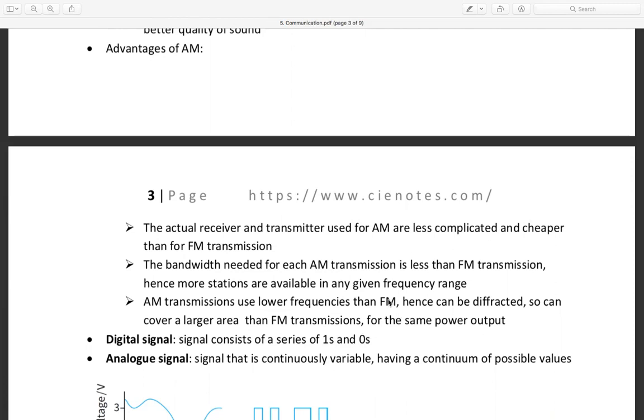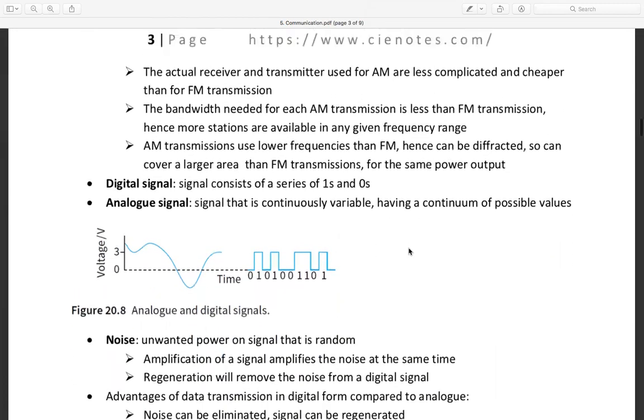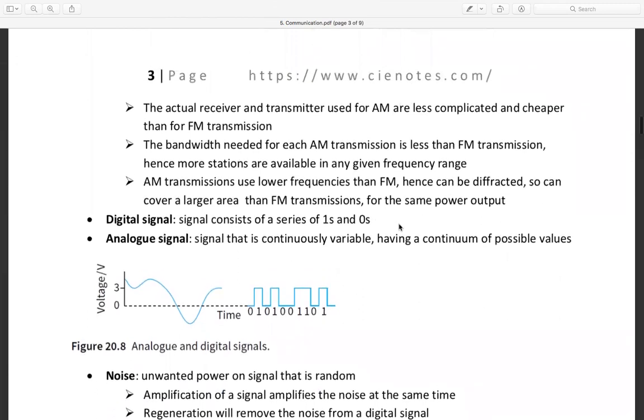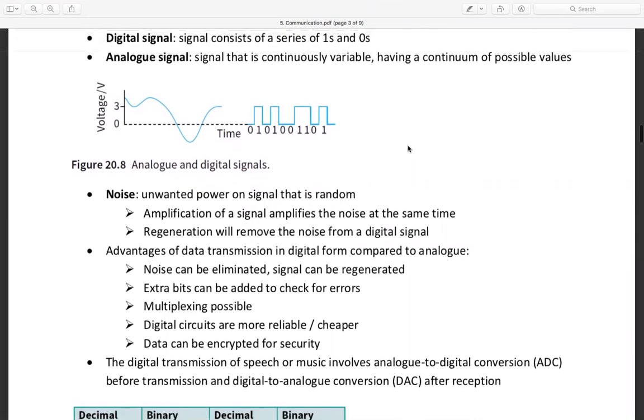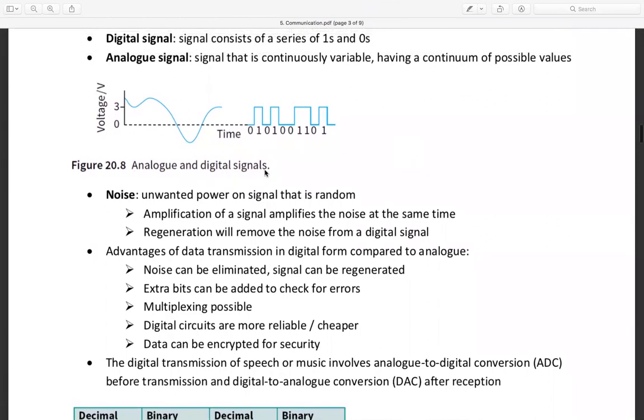Advantages of AM: the actual receiver transmitter used for AM is less complicated and cheaper than FM transmitter. The bandwidth needed for AM transmission is less than FM, which is smaller, hence more stations are available in a given frequency range. AM transmission uses lower frequency than FM, hence can be diffracted so can cover a larger area there. Now, digital signal: signal consists of series of ones and zeros. Analog signal: signal that is continuously variable having continuous possible values.